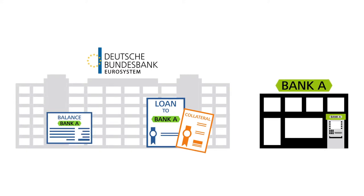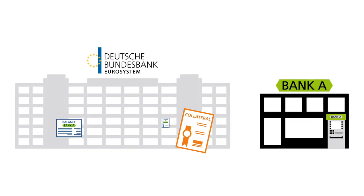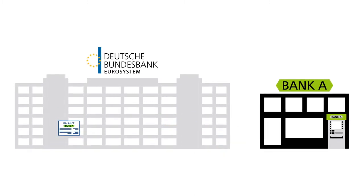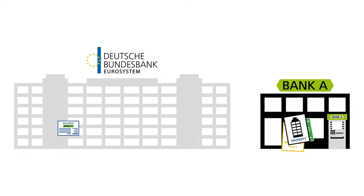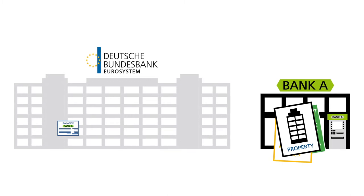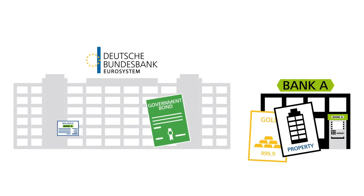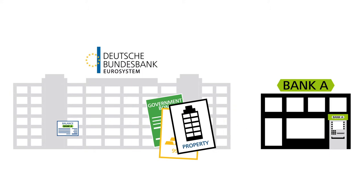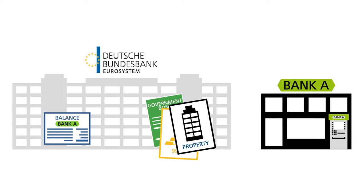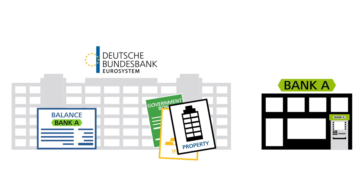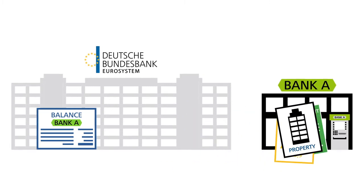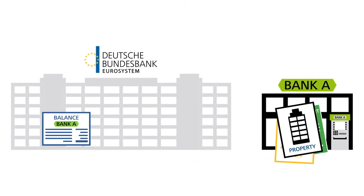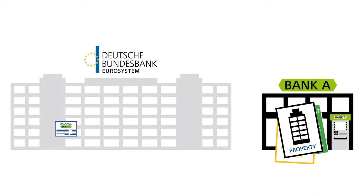If the commercial bank pays back the loan using its account balance, the central bank money that was previously created ceases to exist. Central bank balances also arise if the central bank purchases assets such as government bonds, gold, and property from a commercial bank. The central bank then credits the purchase amount to the commercial bank's account, and as a result the account balance goes up. By contrast, if the central bank sells an asset to the commercial bank, it debits the amount to be paid from the commercial bank's account.